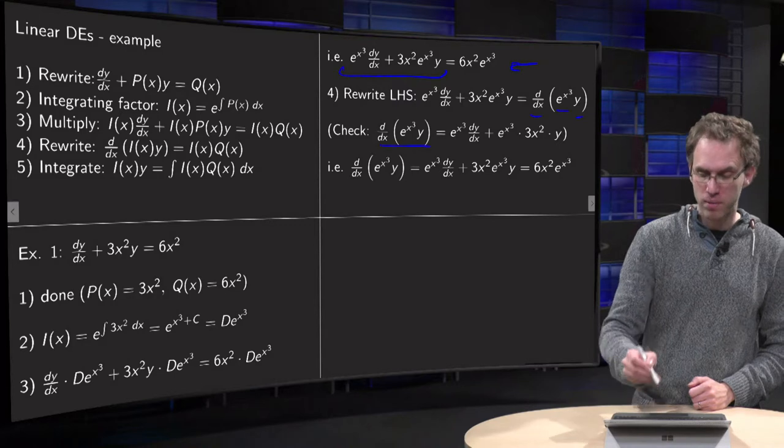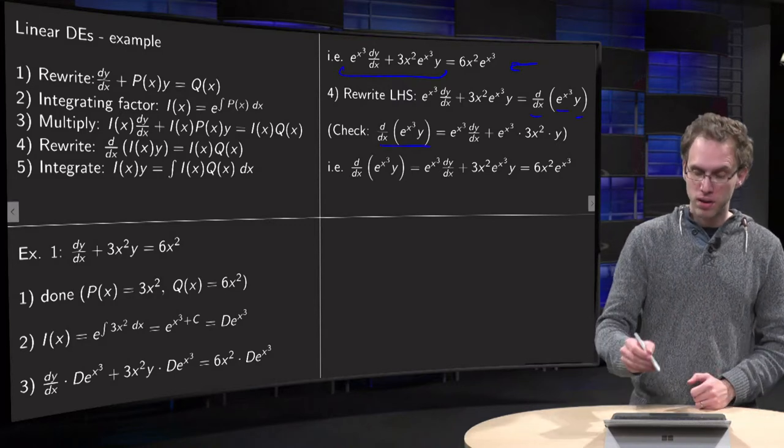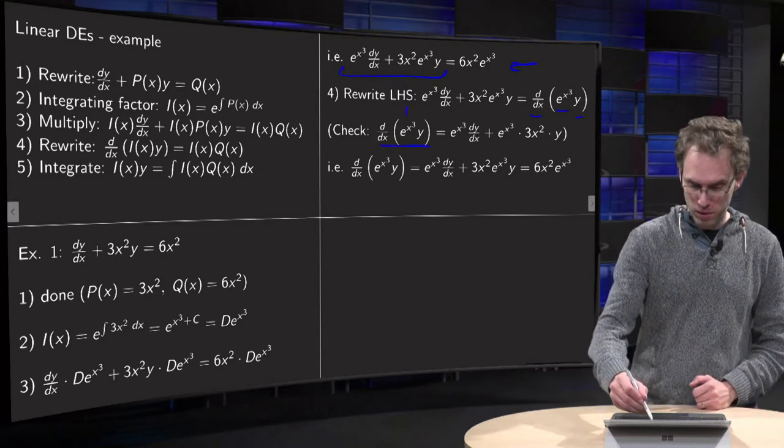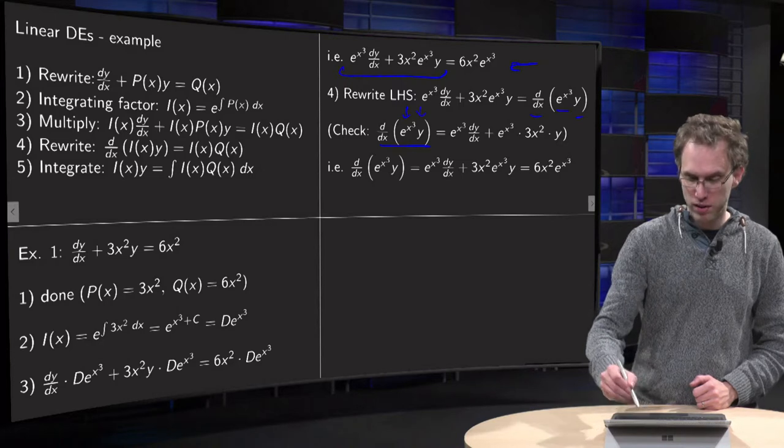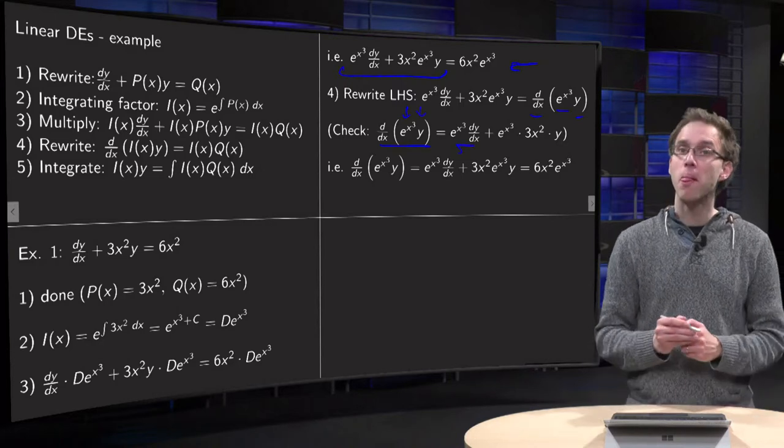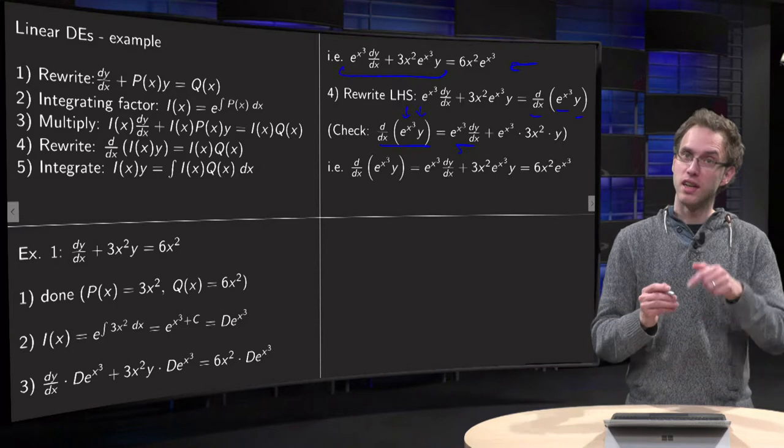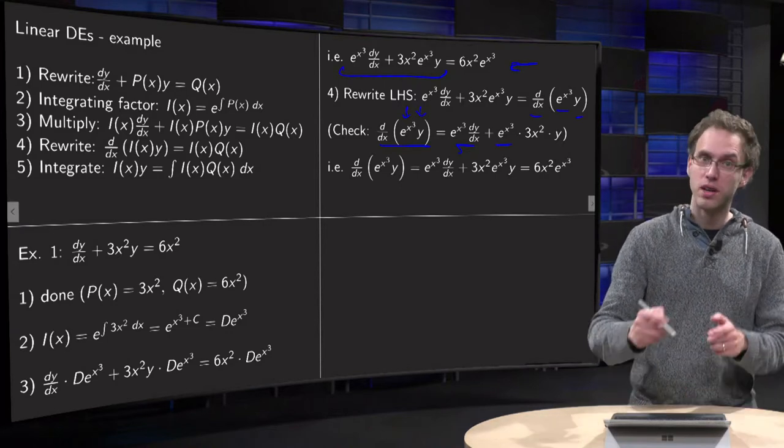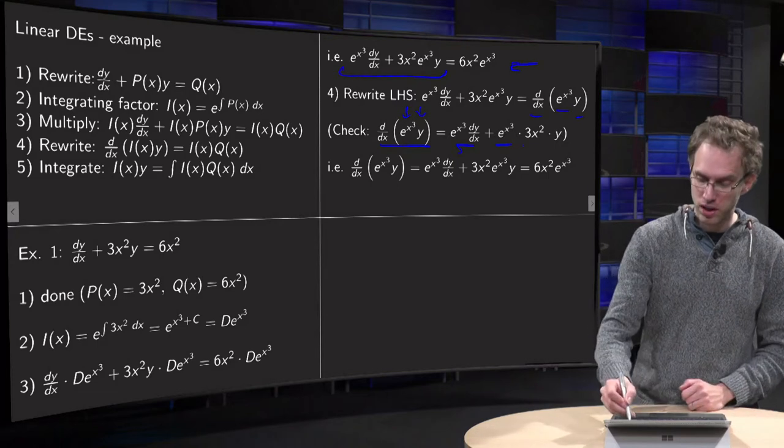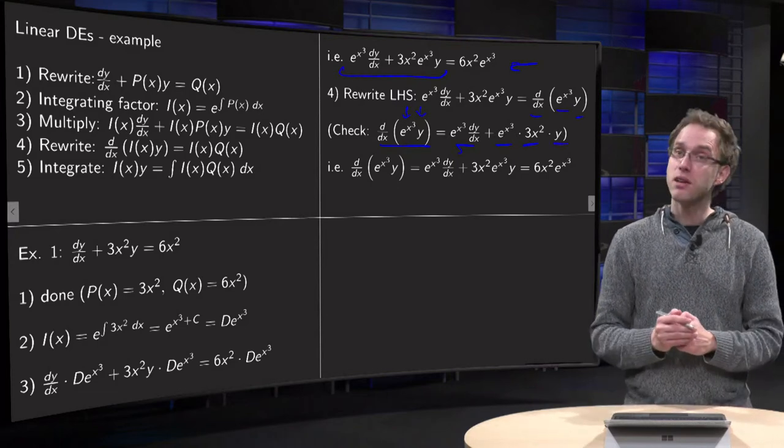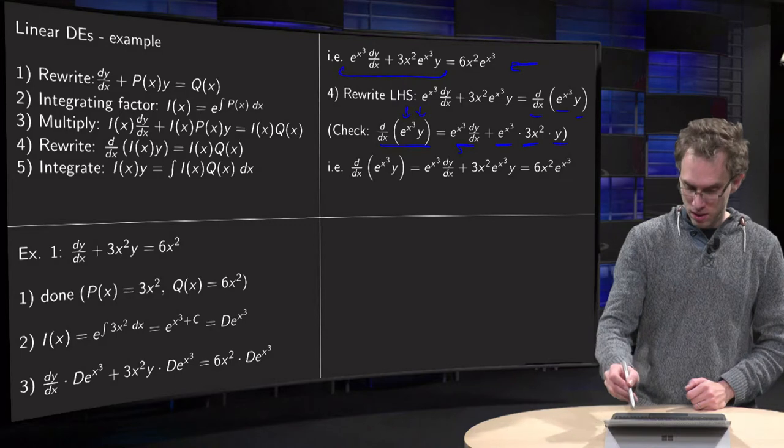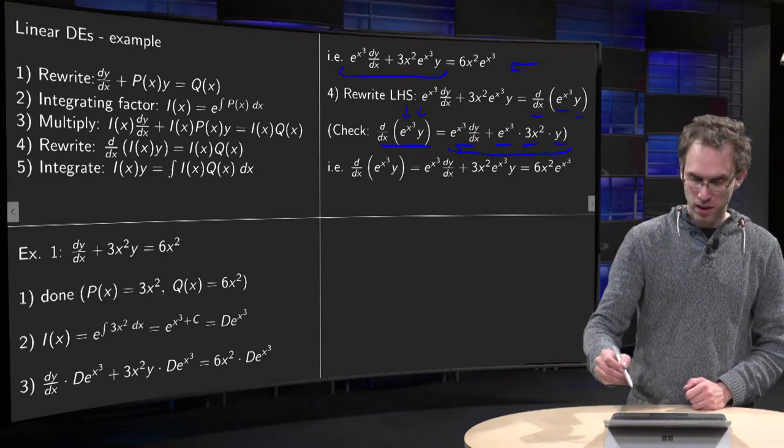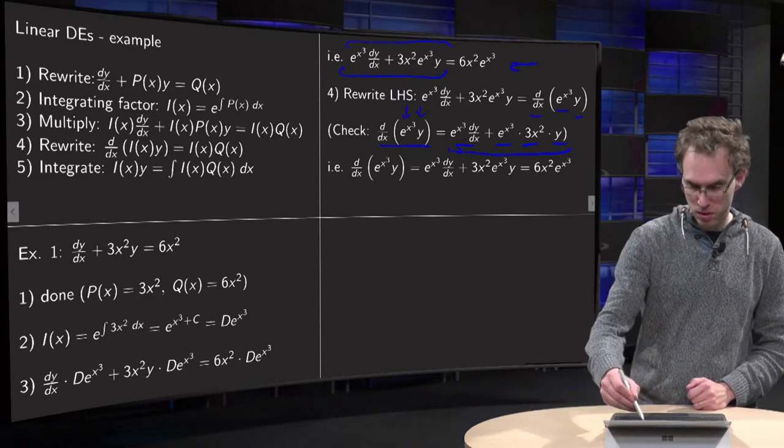So by taking the derivative over here. If you take the derivative, first leave the first part constant and differentiate y with respect to x, yields this term. Plus differentiate e to the power x³, yields e to the power x³ times derivative of x³, 3x² times y. And you see that indeed those two terms here are indeed the same as those two terms over there.